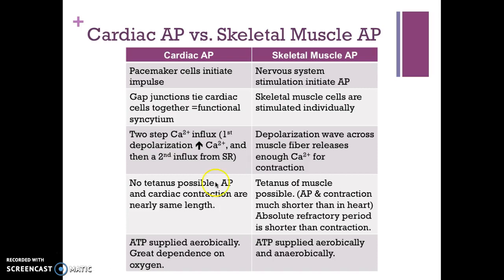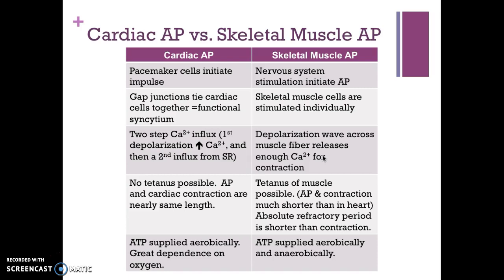This chart summarizes the differences between a cardiac action potential and a skeletal muscle action potential. Pacemaker cells initiate the impulse in a cardiac action potential, whereas nervous system stimulation initiates it in skeletal muscle. In the heart, gap junctions tie cardiac cells together to form what is called a functional syncytium — the heart works as a single unit. In skeletal muscle, cells are stimulated individually. In cardiac action potentials there is a two-step calcium ion influx: first from depolarization, then from the sarcoplasmic reticulum.